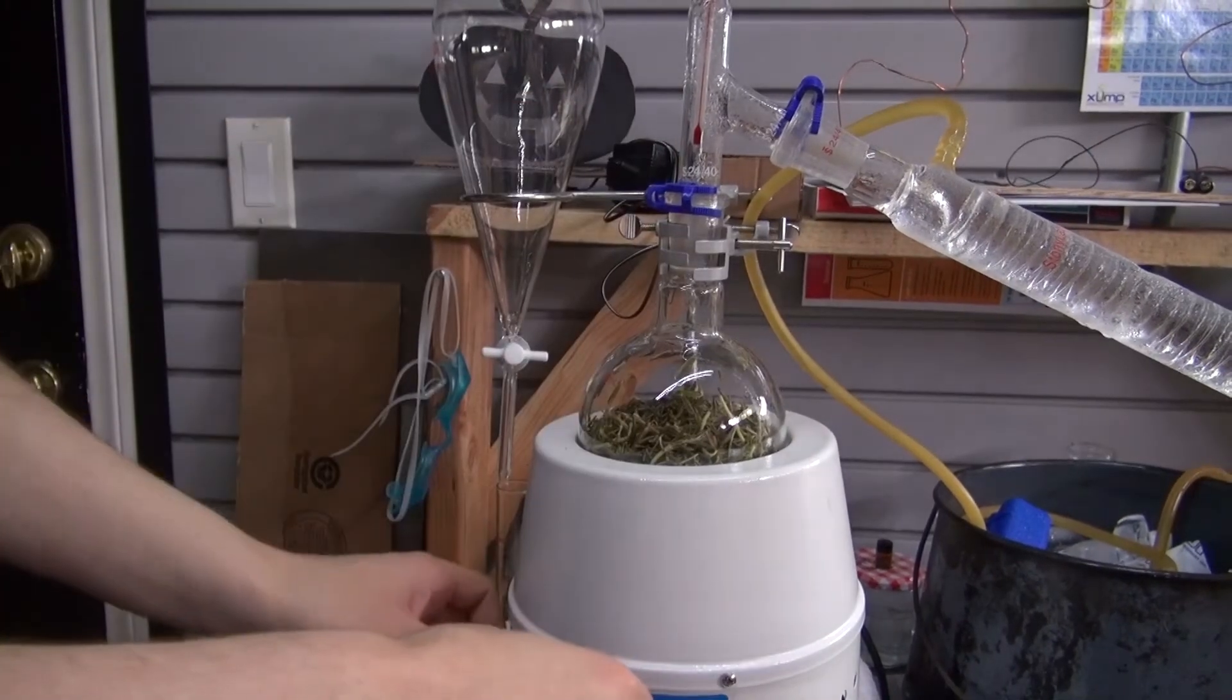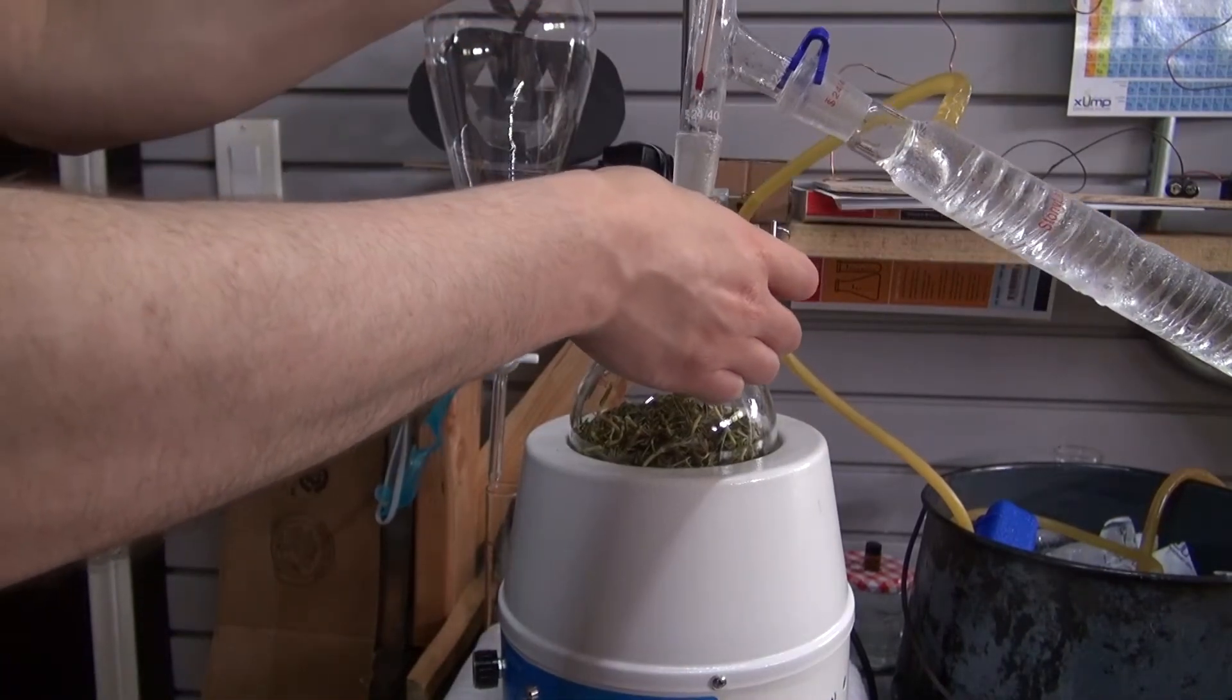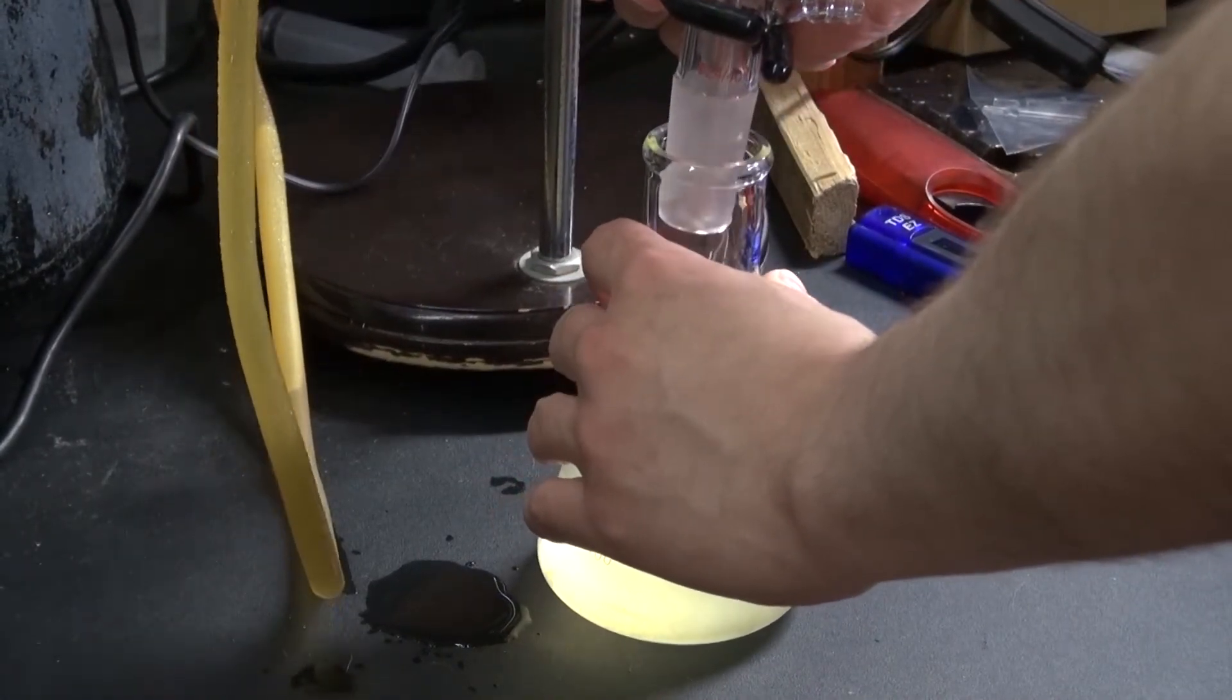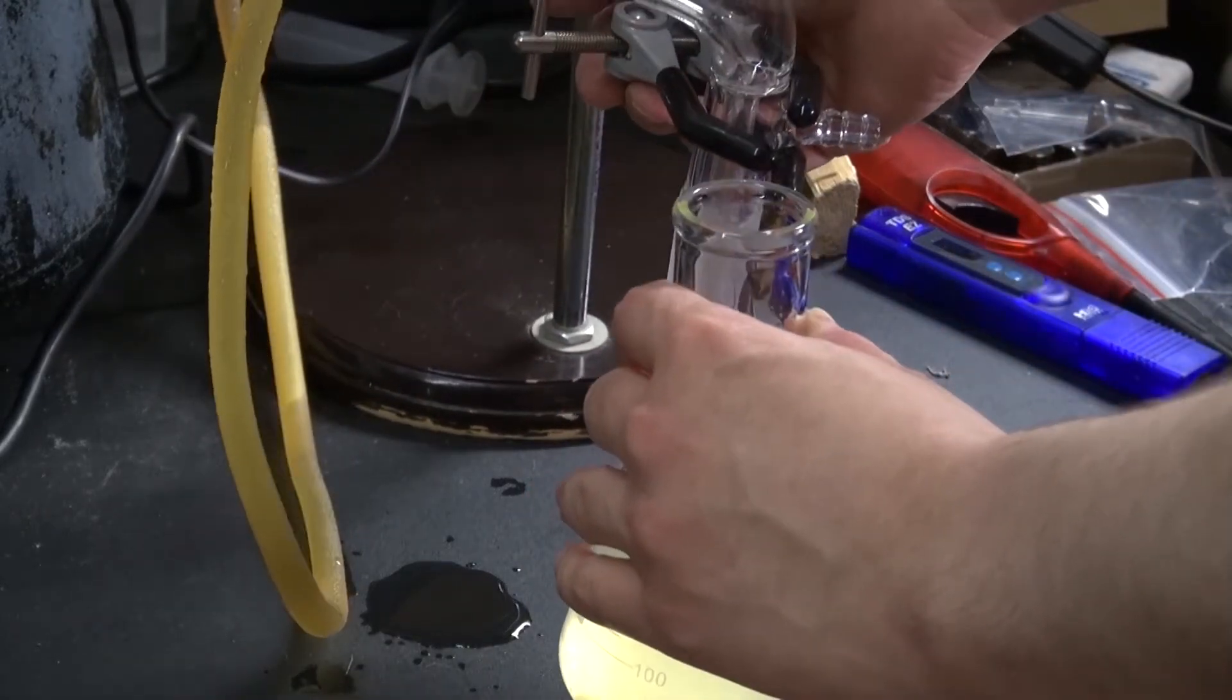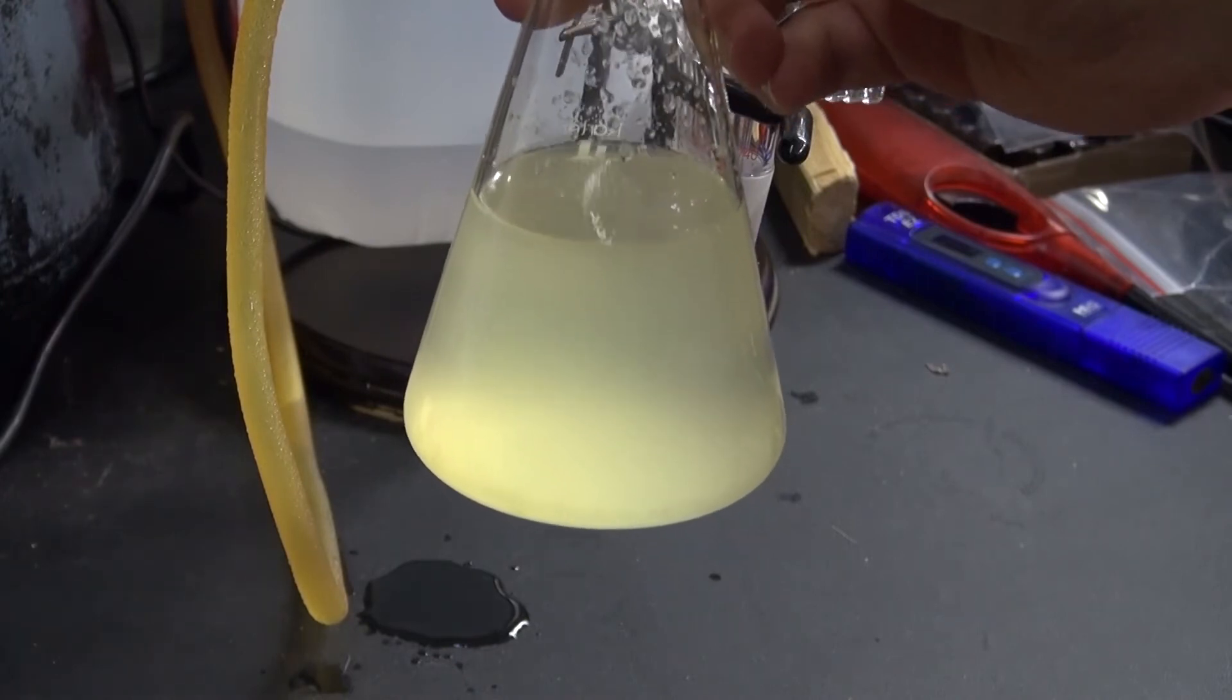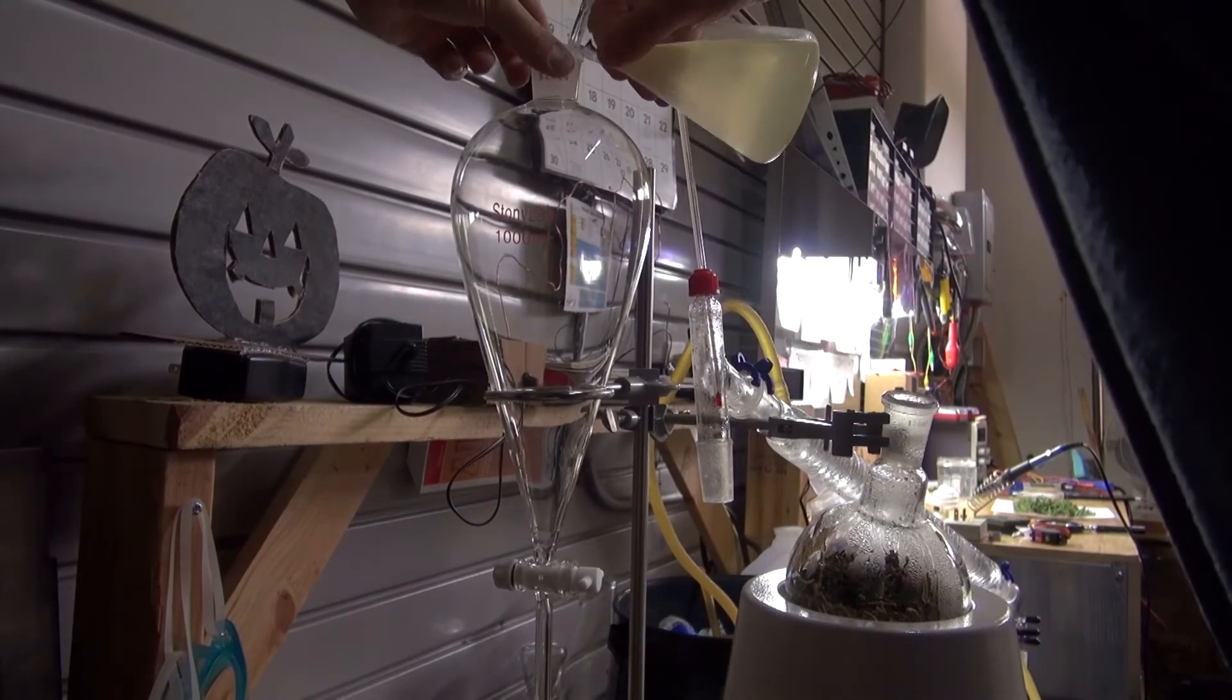So what I'm going to do is turn off the heating mantle, detach the joints. Next I'm going to remove the Erlenmeyer flask that contains my result. This is what the final product looks like of the rosemary hydrosol and essential oil. It still looks very contaminated to me. So I'm going to pour it into my separatory funnel, let it sit for a little while, and then see what kind of results I get.